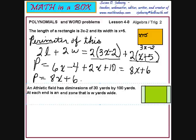An athletic field has dimensions of 30 yards by 100 yards. And at each end is an end zone that is W yards wide. I did not label the rectangle. We're going to learn to label this one. Now, there are 3 rectangles, so we will be finding the area of all 3 rectangles.